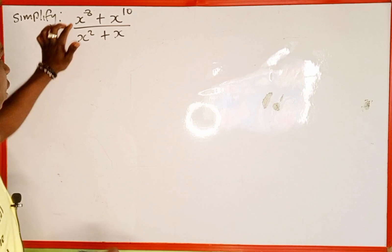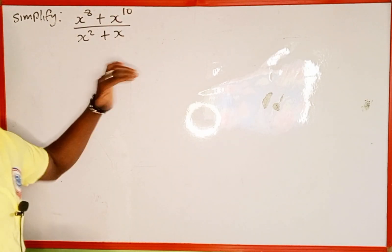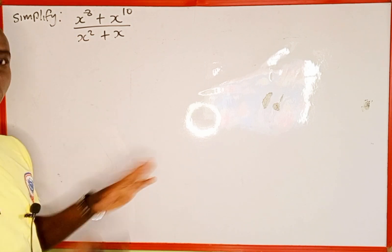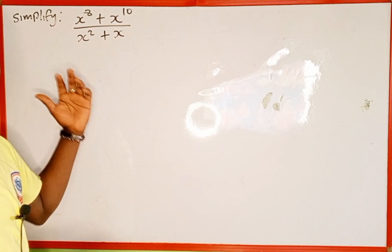What are we going to do? If you look at this numerator, this is x to power 8 and x to power 10. The powers are not the same, but the variables are the same. But we cannot add them together because they are not the same. This is a different thing. But what we are going to do is to factorize.